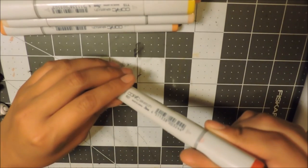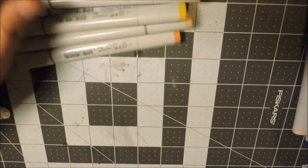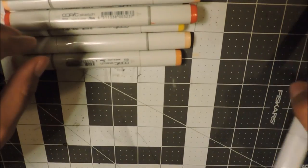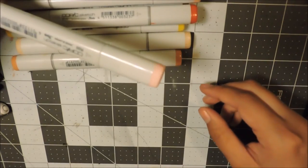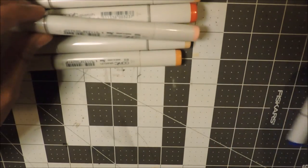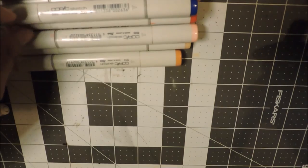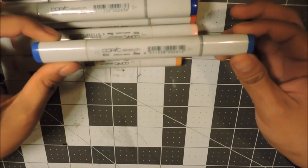This is R27 Cadmium Red, R24 Prawn, R20 in Blush, B29 Ultramarine, and B24 Sky.